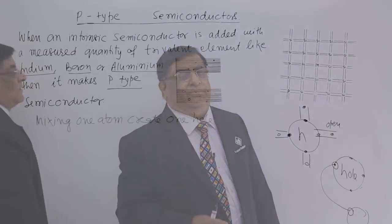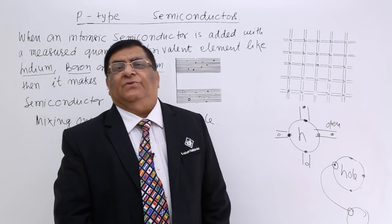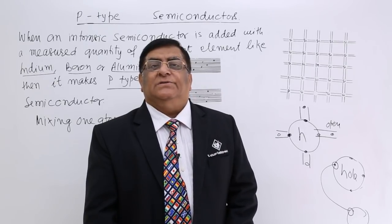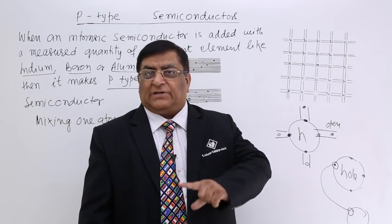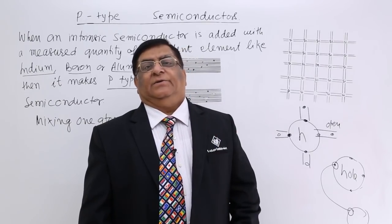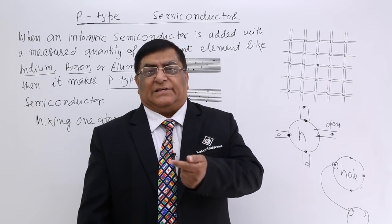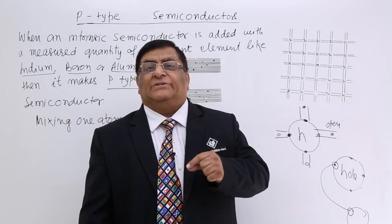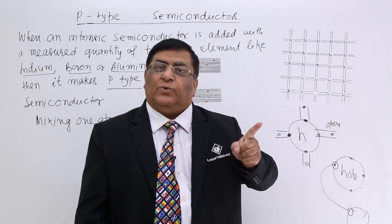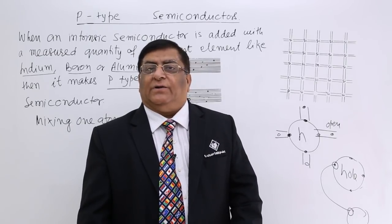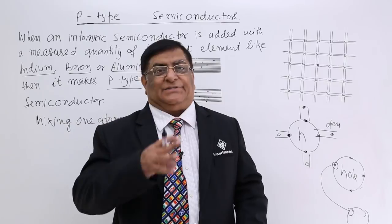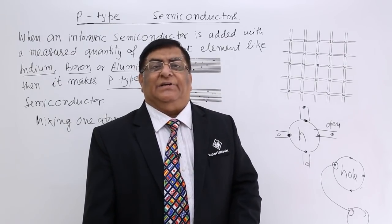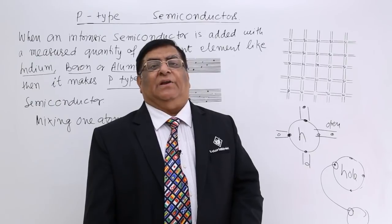Overall, 1 trivalent atom creates 1 hole in the crystal. So mixing 1 trivalent atom creates 1 hole. If we know the number of atoms we are adding, we know the number of holes created — that means it is in our control. We measure the amount of indium or aluminium being mixed, so we know exactly how many atoms we are adding and therefore how many holes we are creating.